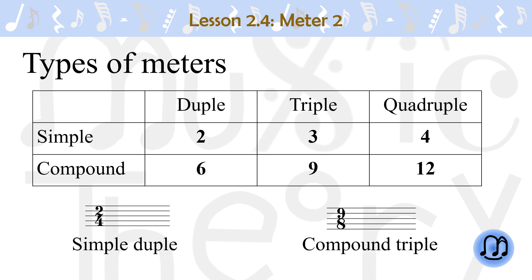For example, 2, 4 is simple duple. And 9, 8 is compound triple. Please note in these examples, we only look at the top numbers and we ignore the bottom numbers.